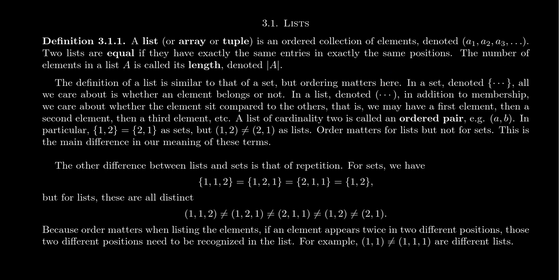It defines the list. Much like sets, it is possible that two lists are equal. But for two sets to be equal, they just have to contain the exact same elements because order and repetition don't matter, and so two sets are equal if they are subsets of each other. For lists, we have to require more because there's more structure — they are ordered collections after all. Two lists are said to be equal if they have the exact same entries in exactly the same positions.